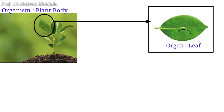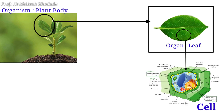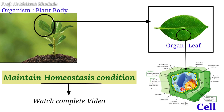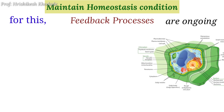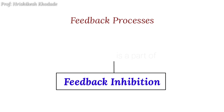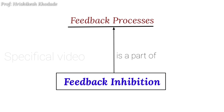Friends, every organism or every cell in that organism needs to maintain a homeostasis condition. What homeostasis is, we will come to know at the end of this lecture. One of the ways to carry out this is a feedback process taken by that cell or organism. Feedback inhibition is a part of it, which we are discussing here in this special video.